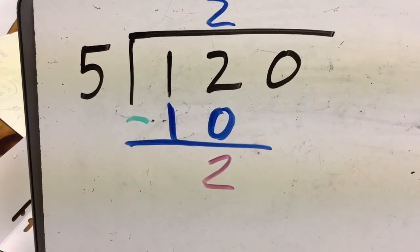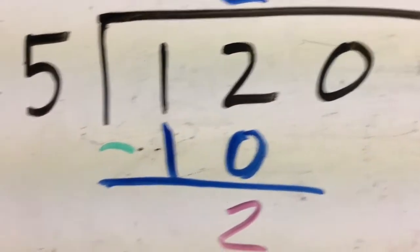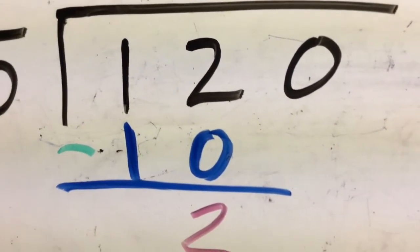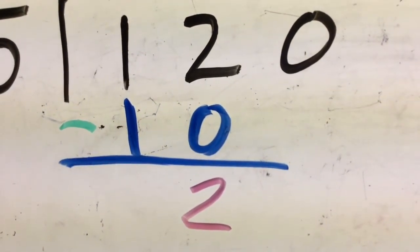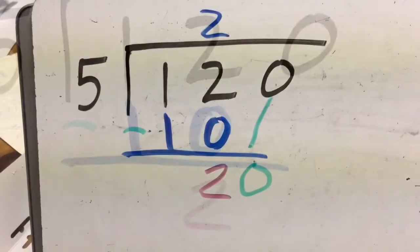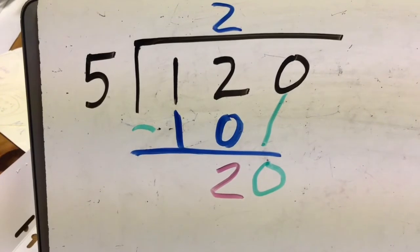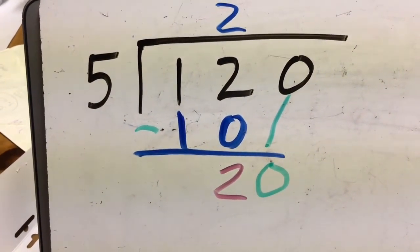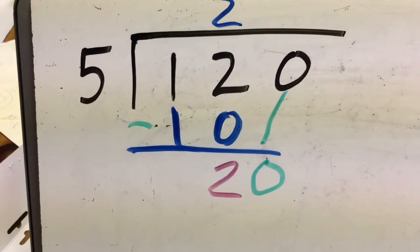Now I still have to deal with the zero — the zero is part of my 120, and I haven't dealt with it yet. I've only dealt with the one and the two, so I've got to keep going. The zero is now going to come down next to the two and form 20, because that's what's left of the 120. I slide that zero down — I drew a green line to show you that strategy. That shows me I took care of the zero.